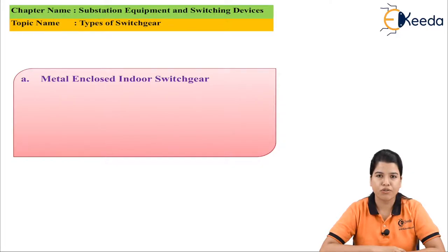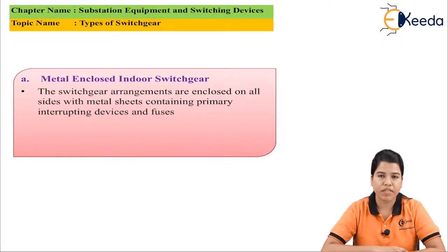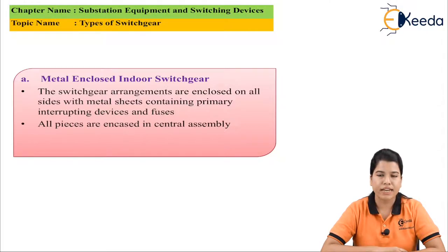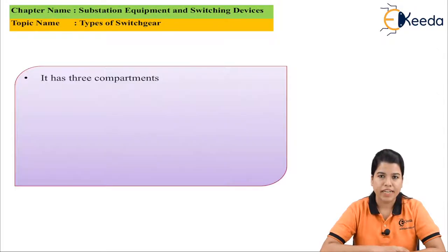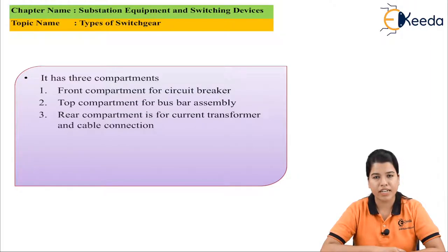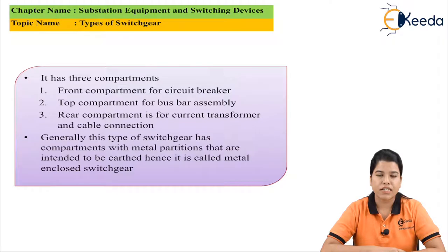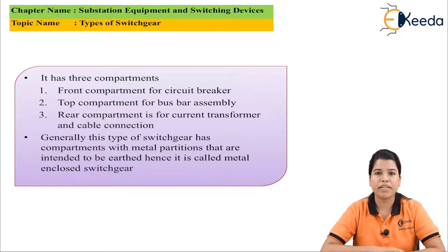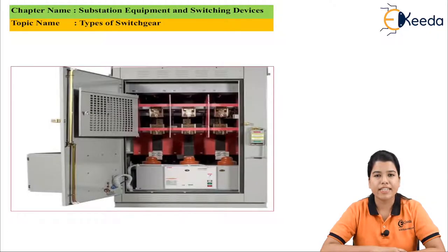Metal enclosed indoor switchgear has a metal enclosure from all sides and all pieces are enclosed in a central assembly. It basically has three compartments: the front compartment is for the circuit breaker, the top compartment is for the bus bar assembly, and the rear compartment is for the current transformer and connections. These metal compartments are grounded, hence it is called enclosed type switchgear.